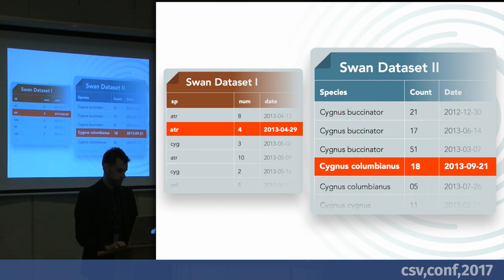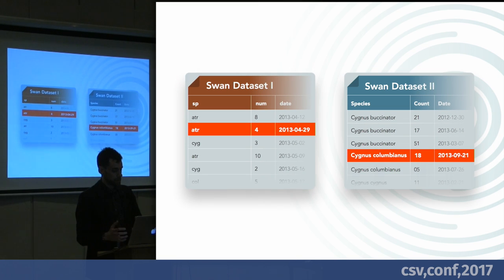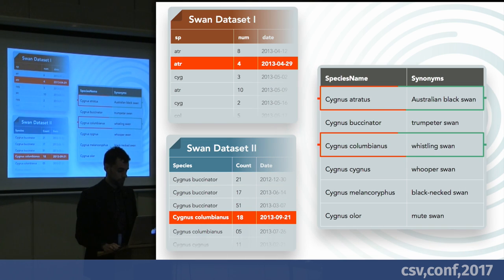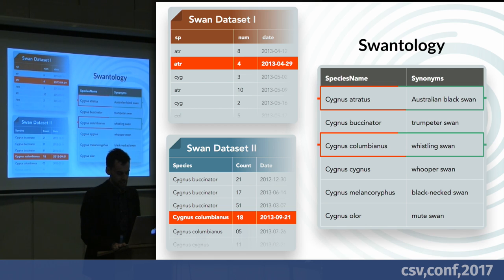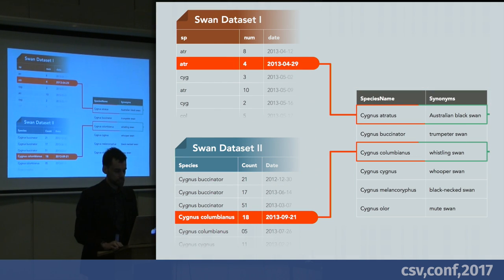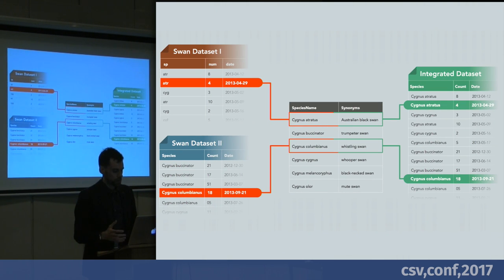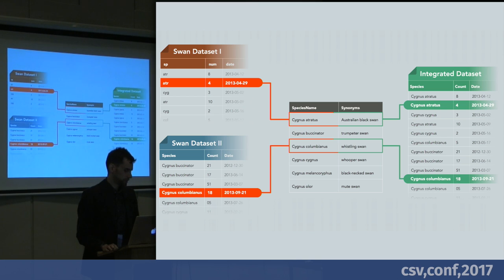I want to integrate another dataset that another researcher created, and as you can see in these two datasets, the swan species are referred to differently. You don't want to just rename them because that's not going to generalize. So if you went and found an ontology of swans — you might want to call it a swan-tology — and you annotate your data linking it to that ontology, that's the hard part. After you have that link, conceptually it would be relatively simple to get your data to work together.